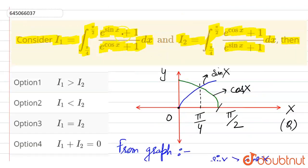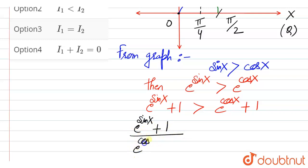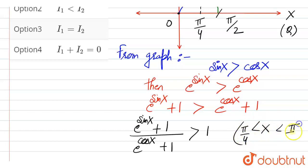Now, what we have here: we can write that (e to the power sin x + 1) divided by (e to the power cos x + 1) is greater than 1. This is only possible when x is between π/4 to π/2 — within this range, we can say this is true.